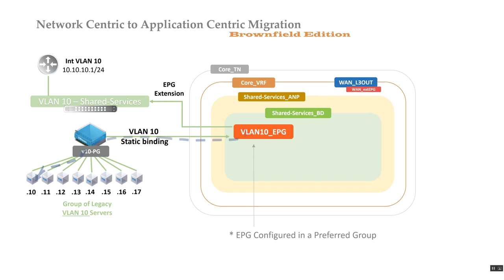This effectively means any communication from the legacy environment would go through the ACI fabric, back into the legacy environment, and up to the default gateway. Typically you move one or more workloads or compute environments until you're comfortable with the process.